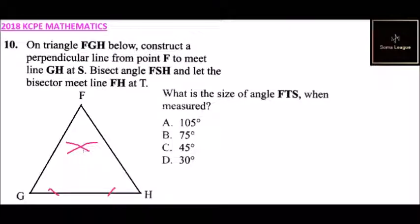Then from there you'll be able to get the aligned joining. That is, let's say that is your S. So you are required to bisect FSH.